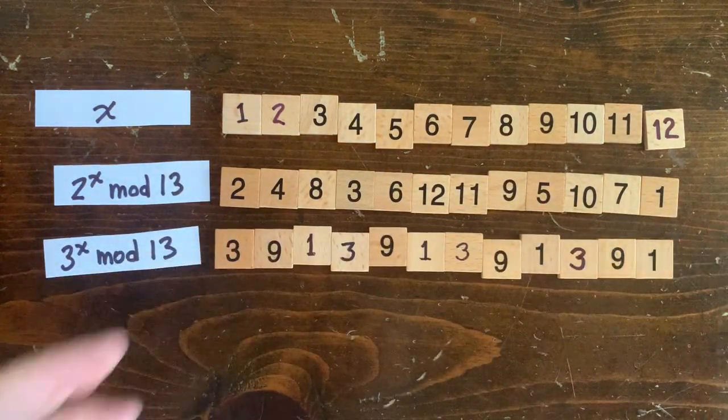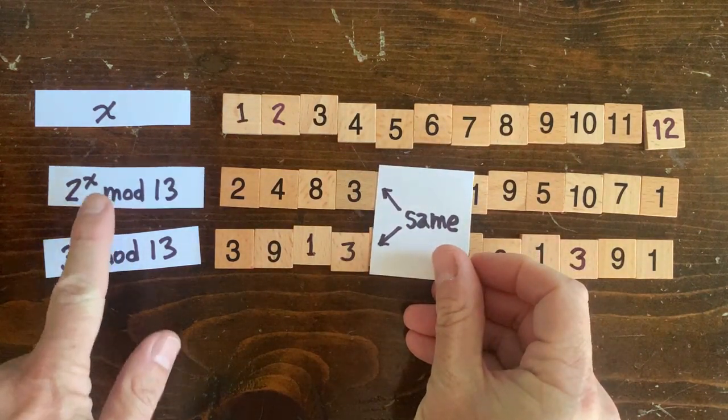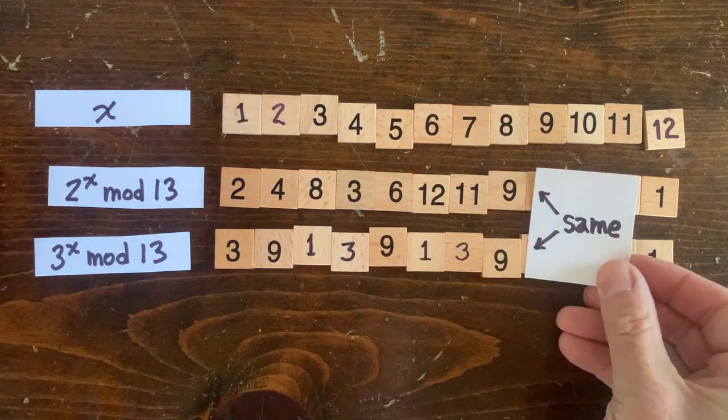And when the remainders are the same, we know that 3^x minus 2^x is divisible by 13. So that happens when x is 4, 8, 12, and so on.